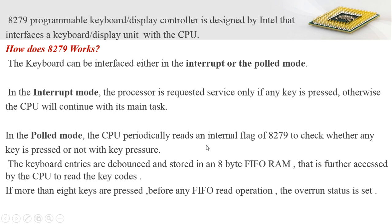But in polled mode, the CPU periodically reads an internal flag of the 8279 to check whether any key is pressed or not. In interrupt mode, the processor can continue the main task and respond to a key pressing operation only when an interrupt is received from the 8279 interfacing unit. But in polled mode, the CPU needs to periodically check the status of the key. These are the two modes of operation regarding keyboard interfacing.